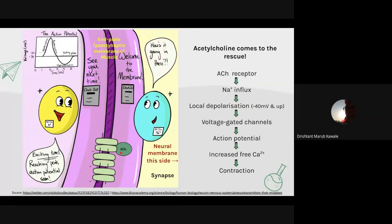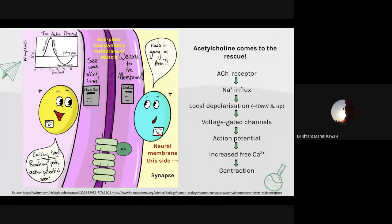Once acetylcholine binds, some ions are released inside the cell. Acetylcholine has two types of receptors: nicotinic and muscarinic. Nicotinic receptors are the ion channel-linked receptors, and muscarinic receptors are GPCR-based.